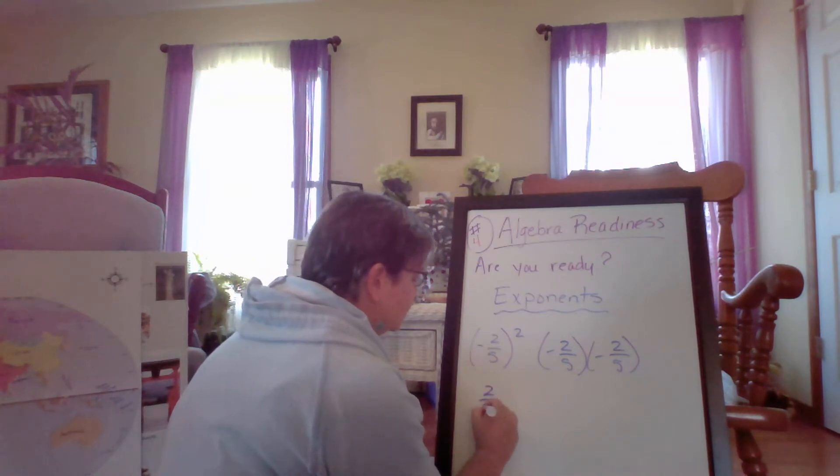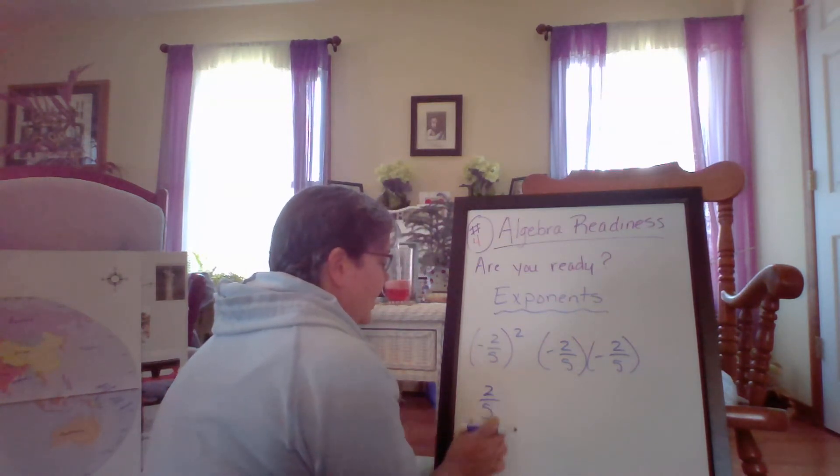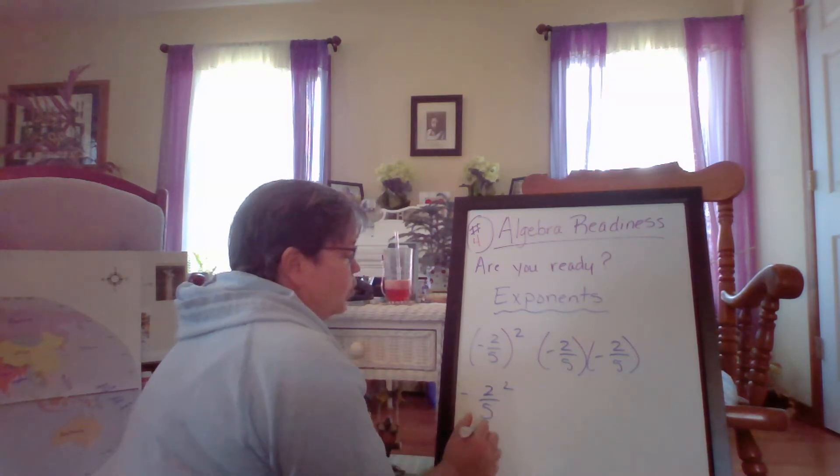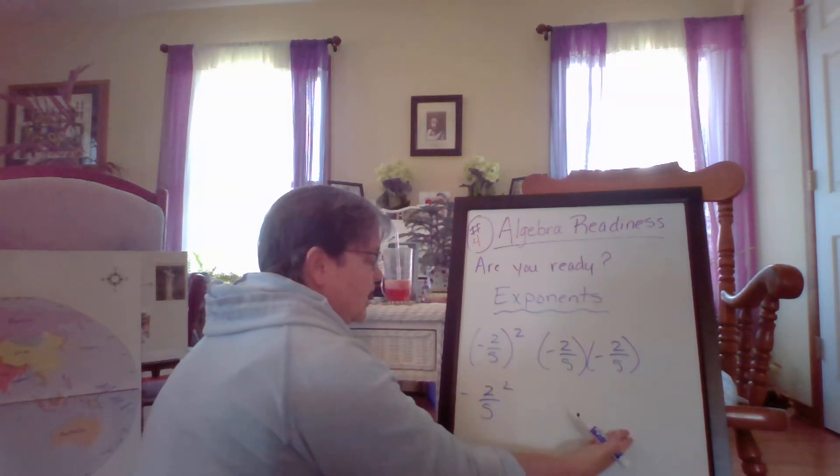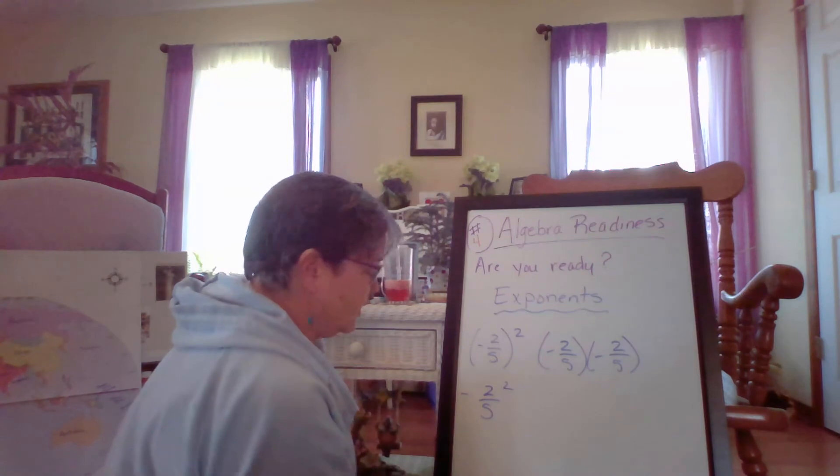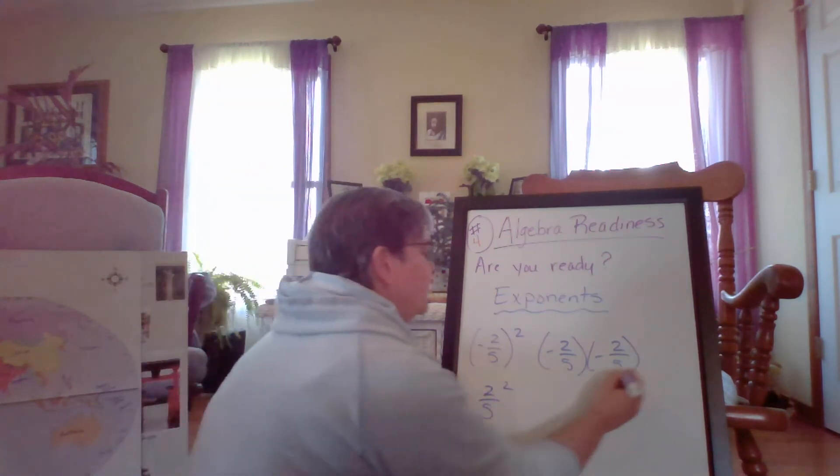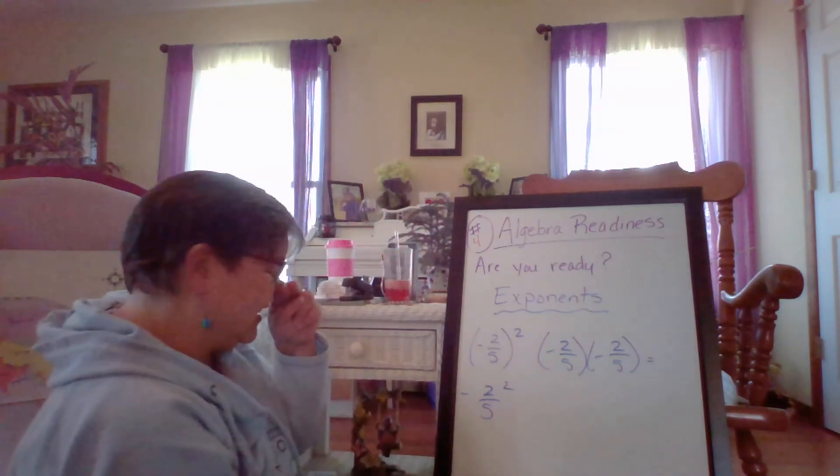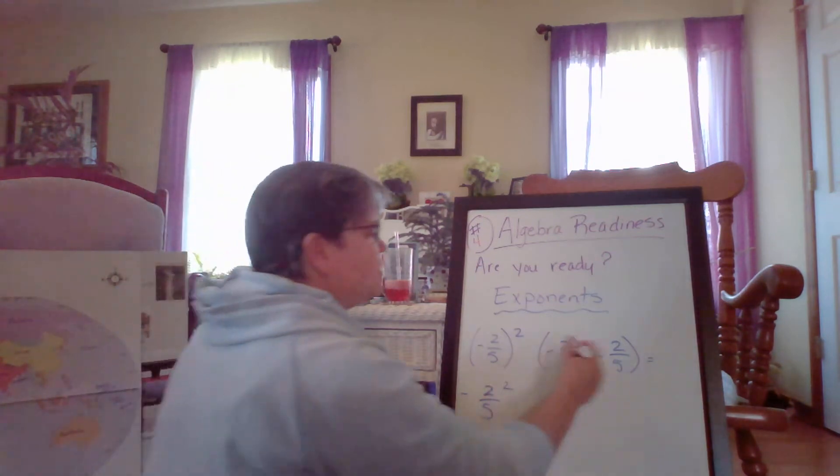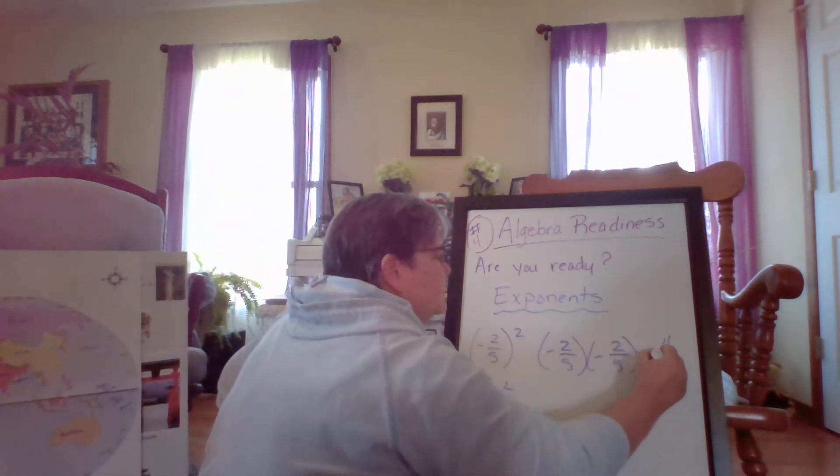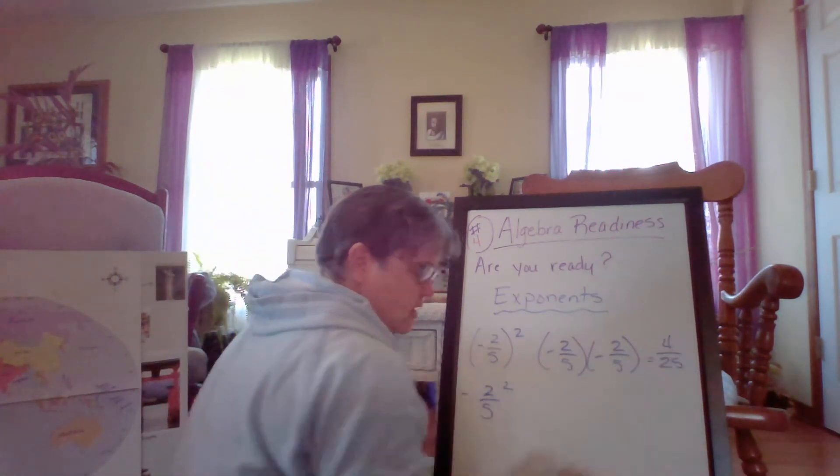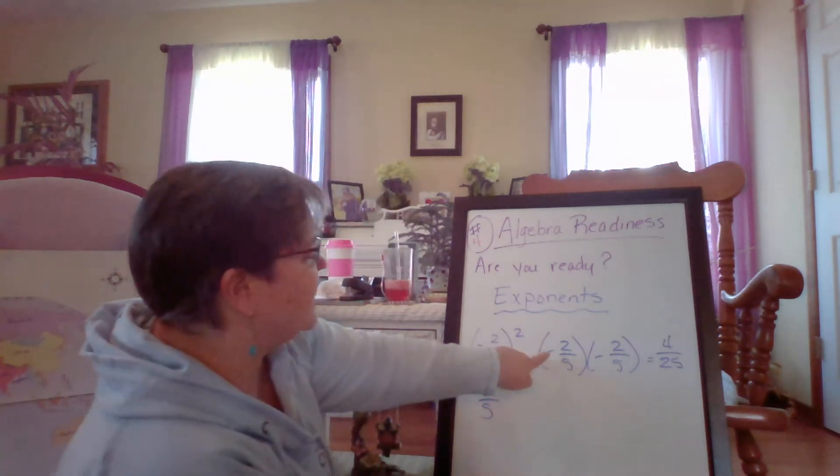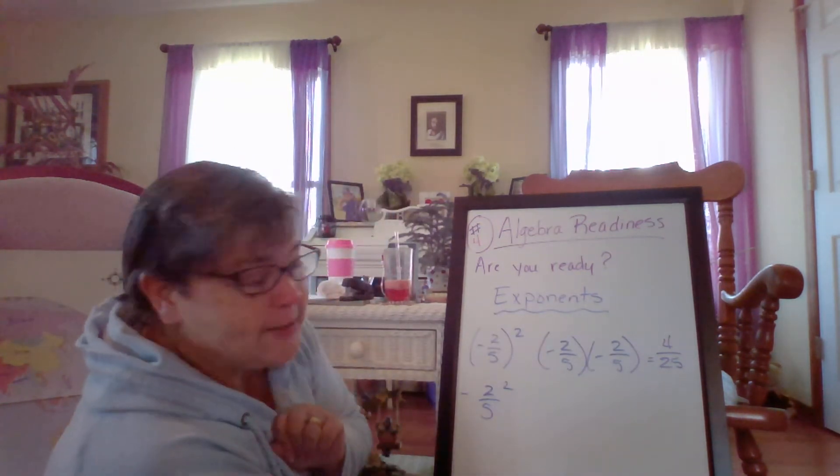If it was two-fifths without the parentheses here, we would bring the negative to the answer and it would be a different answer. So we'll do both of these. All right, so we're going to multiply. Two times two is four, five times five is 25. All right, so we have four twenty-fifths. Negative times negative gives me a positive, right?